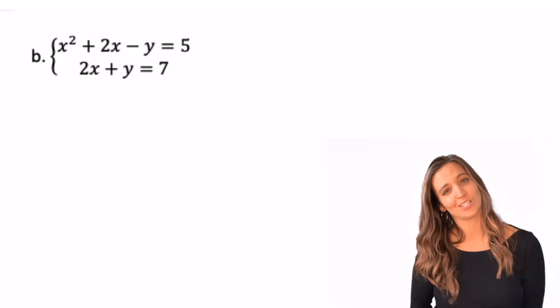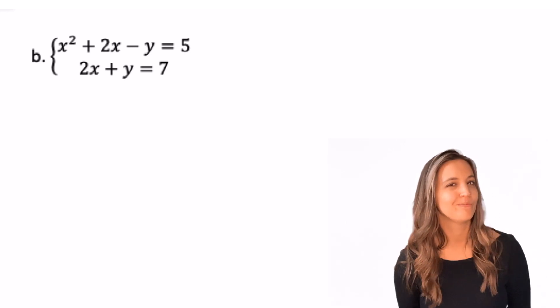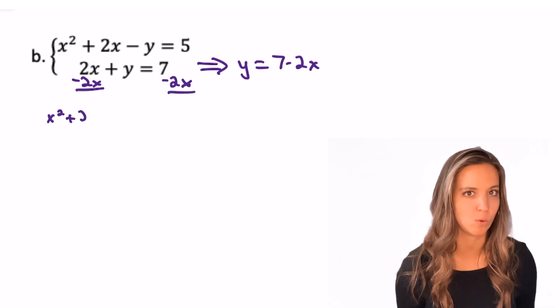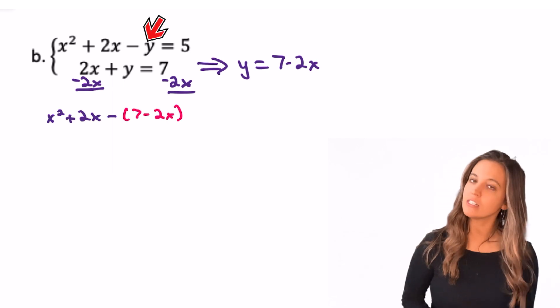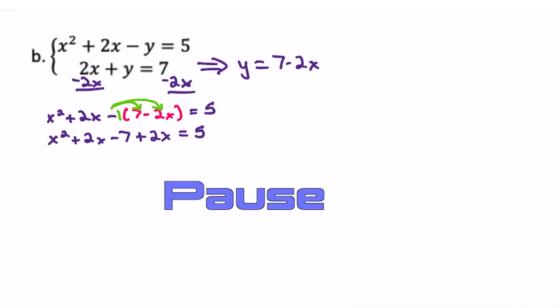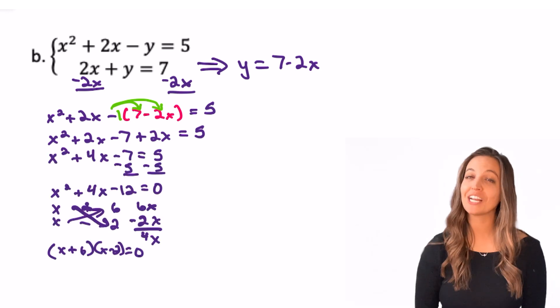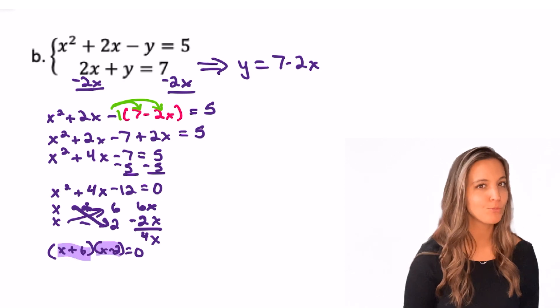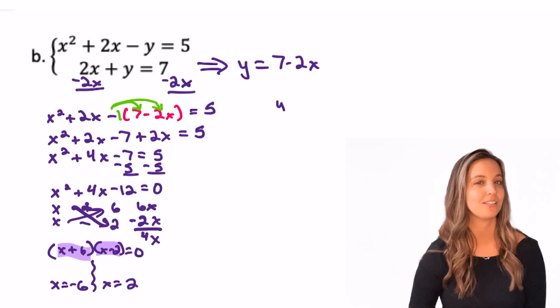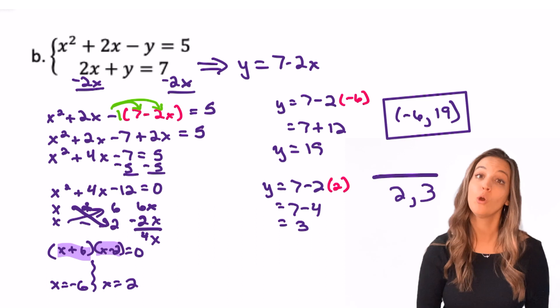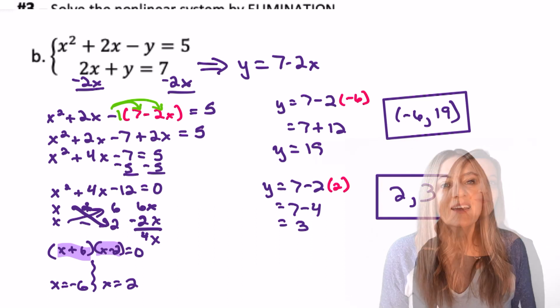To solve by substitution on this next one, what's the first thing we need to do? Yeah, subtract 2x on that second equation so we have y equals. Then take a moment to substitute that into your first equation and set up your quadratic. With that quadratic equation, I can use crisscross and factor into x plus 6, x minus 2. Using zero product property, I get x equals negative 6 and x equals positive 2. Plug those back in to find my y's and I have my two real solutions to this nonlinear system.